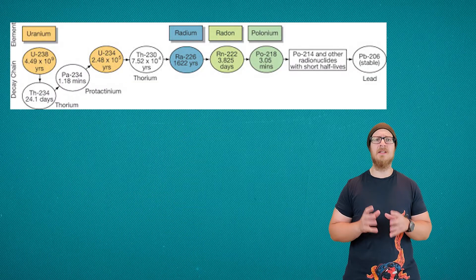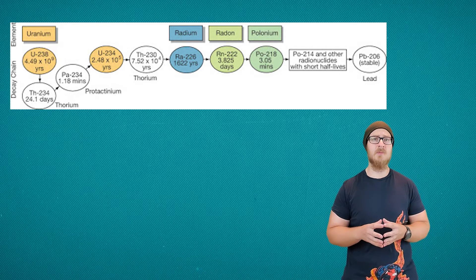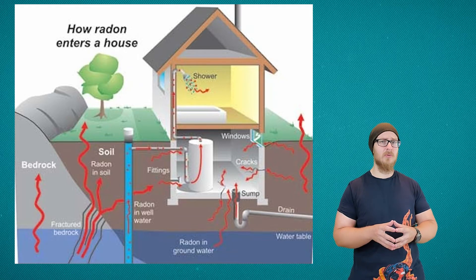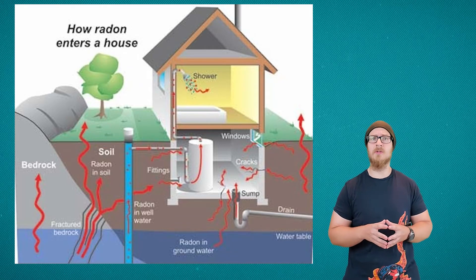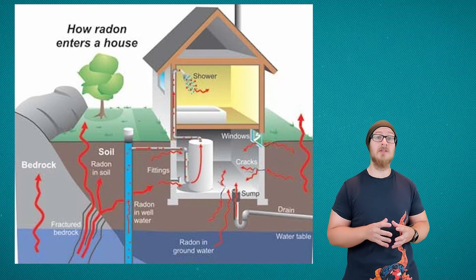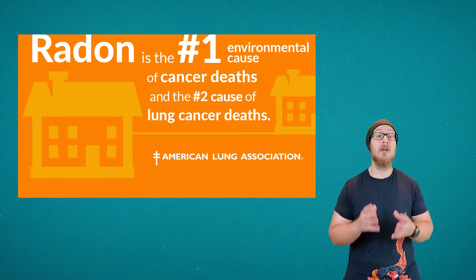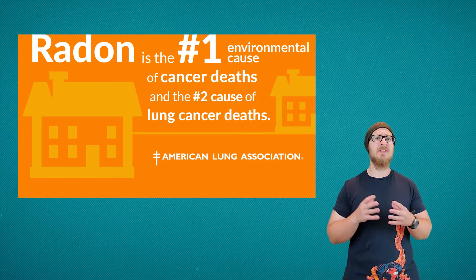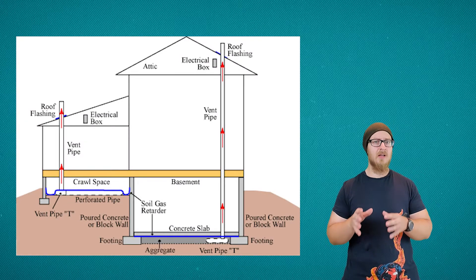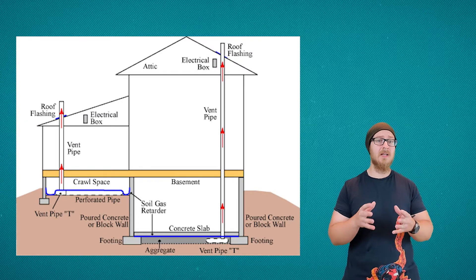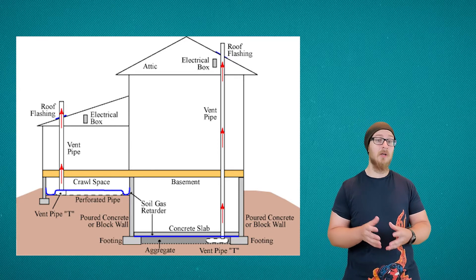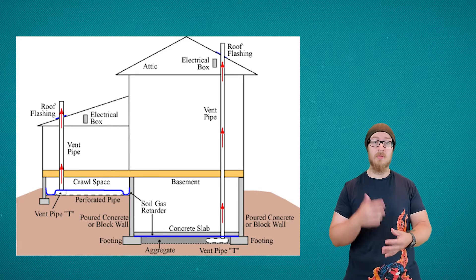Radon is a bit more insidious. It is a naturally occurring gas that is part of the decay chain of uranium. Radon can enter homes through any crack in the foundation, and it is radioactive and therefore can lead to cancer. In fact, radon is the number one environmental cause of lung cancer and the second largest contributor to lung cancer deaths. Many modern homes are radon resistant, and you can reduce your risk by ensuring there are no cracks in your foundation, floors, or around pipes.